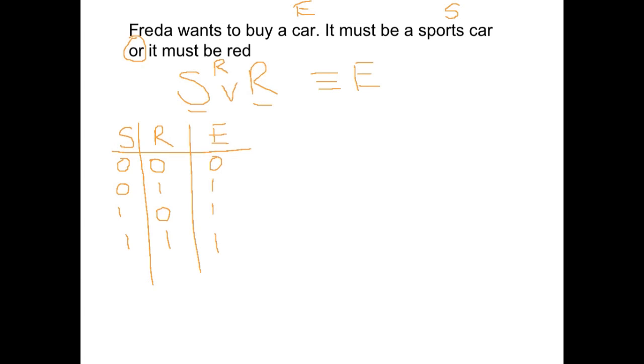Let's also draw her circuit diagram. So we've got sports car, red, eligible. We've only got two inputs. And they are connected using an or. So a nice easy one there. Let's try a slightly harder one.